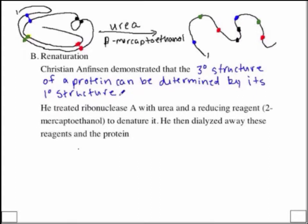Now we can talk about nuances to this, but for now I want to hit the take-home message. He treated ribonuclease A with urea and reducing reagent to denature it. He then dialyzed away these reagents, and the protein regained its native active tertiary structure.